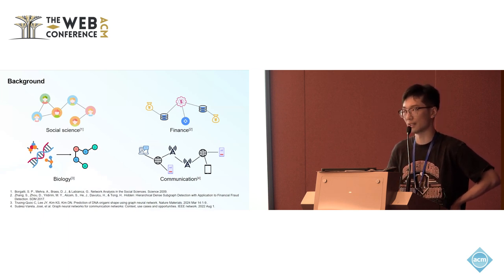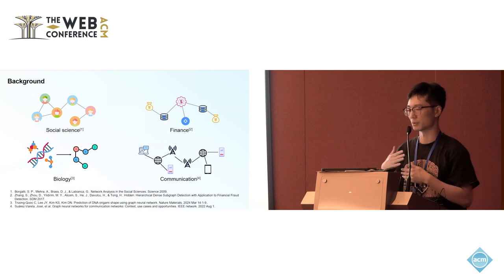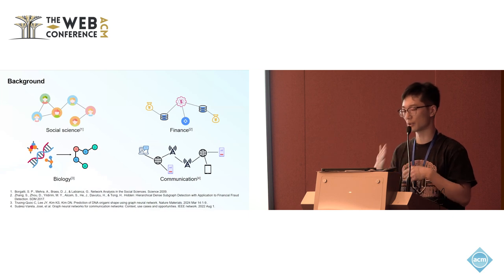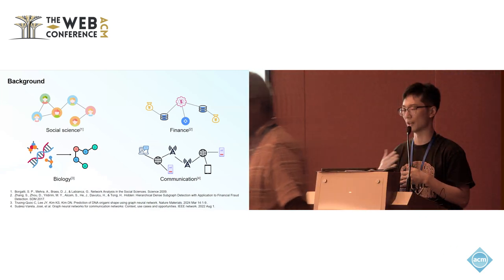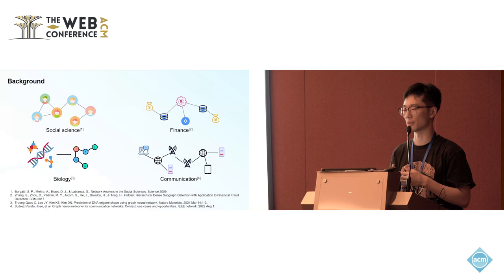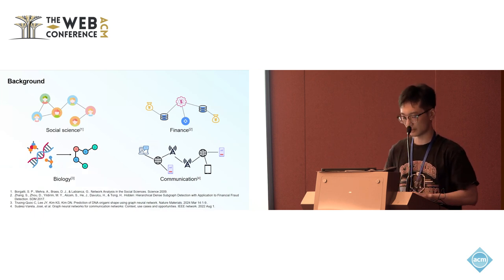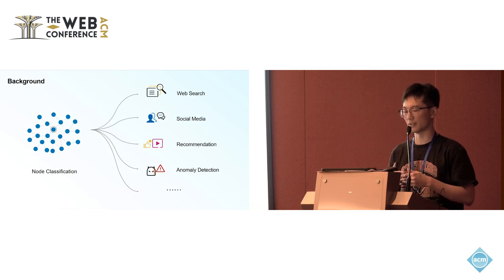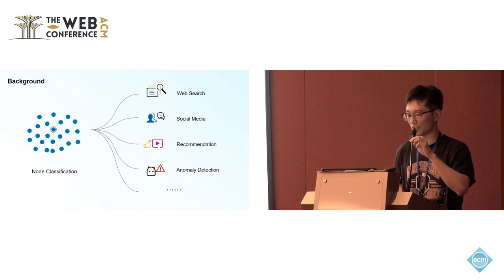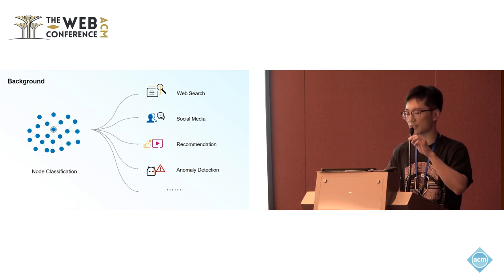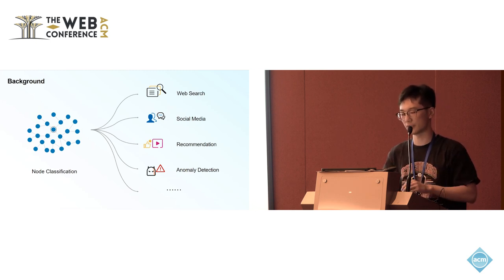First, I'll briefly introduce the background of our work. Graph and structured data is ubiquitous in real-world applications, such as social science, finance, biology, and communications. Web graph mining tasks, especially node classification, have emerged as one of the most crucial tasks for various applications including web search, social media, recommendations, and anomaly detection.